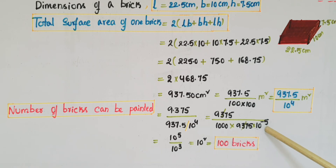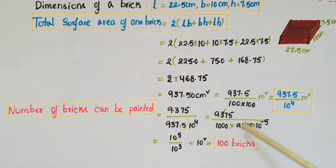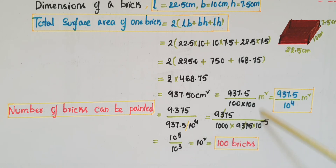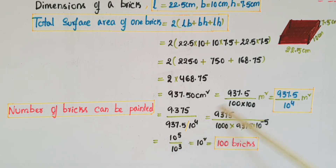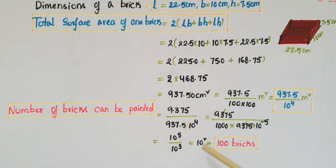Cancelling the 9375 values, we bring 10⁻⁵ to the numerator as 10⁵. So we get 10⁵ divided by 10³, which equals 10² = 100. Therefore, the number of bricks that can be painted is 100 bricks.